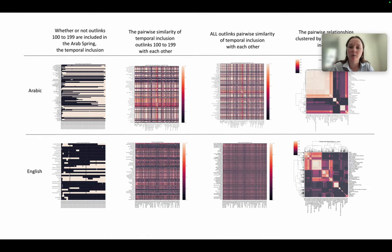This is a breakdown of our proposed method. We first looked at when the outlinks were included within the broader article's lifespan. We then looked at the pairwise similarity between outlinks. So, when outlinks are included at the same time as other outlinks, then we clustered them by their temporal inclusion and pairwise similarity.